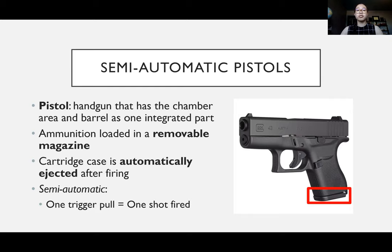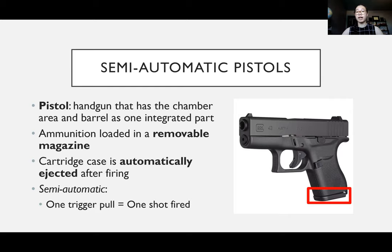With pistols, your cartridge case is going to be automatically ejected, which is good for us — it leaves evidence behind unless the shooter picks them all up. These are labeled semi-automatic pistols. What makes it semi-automatic is that one trigger pull fires one shot. It's automatic in the sense that the trigger pull initiates the cycle of fire on its own — you don't have to manually cock the hammer. This is opposed to a fully automatic pistol, submachine gun, or automatic rifle, where holding the trigger fires continuously until you release it or run out of ammunition.